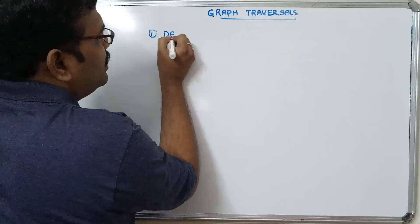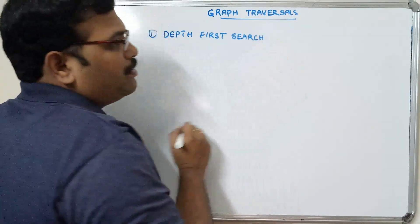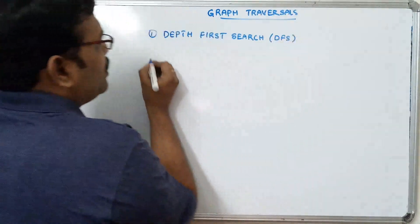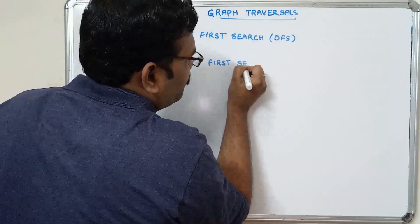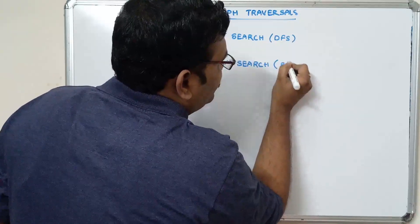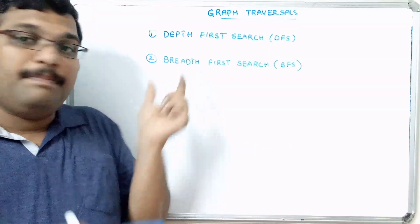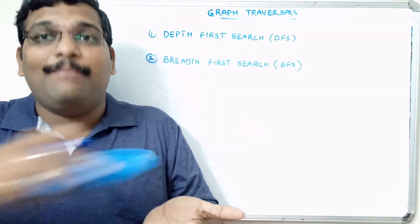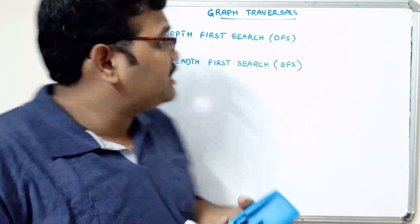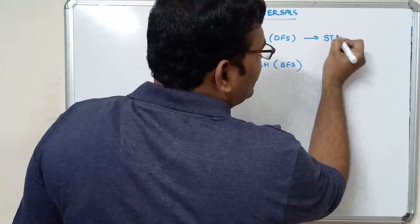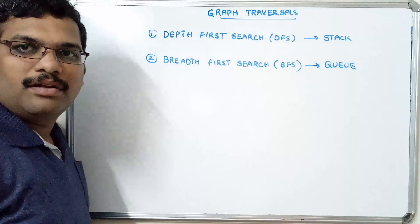We are having two types of techniques in graph traversal. The first one is Depth-First Search, called DFS, and the second one is Breadth-First Search, called BFS. In DFS we travel all nodes based upon depth. In BFS we visit all nodes of the same level first, then shift to the next level. To implement DFS we use a stack data structure, and to implement BFS we use a queue data structure.